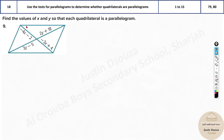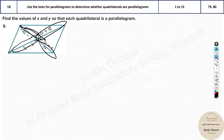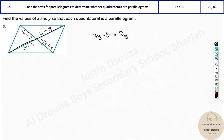What about this one? We need to find x and y. In a parallelogram, the diagonals bisect each other, so each half of one diagonal equals the other half. This particular segment must equal the opposite segment. Equate: 3y minus 5 equals 2y plus 18. Solving: 3y minus 2y equals 18 plus 5, so y equals 23.